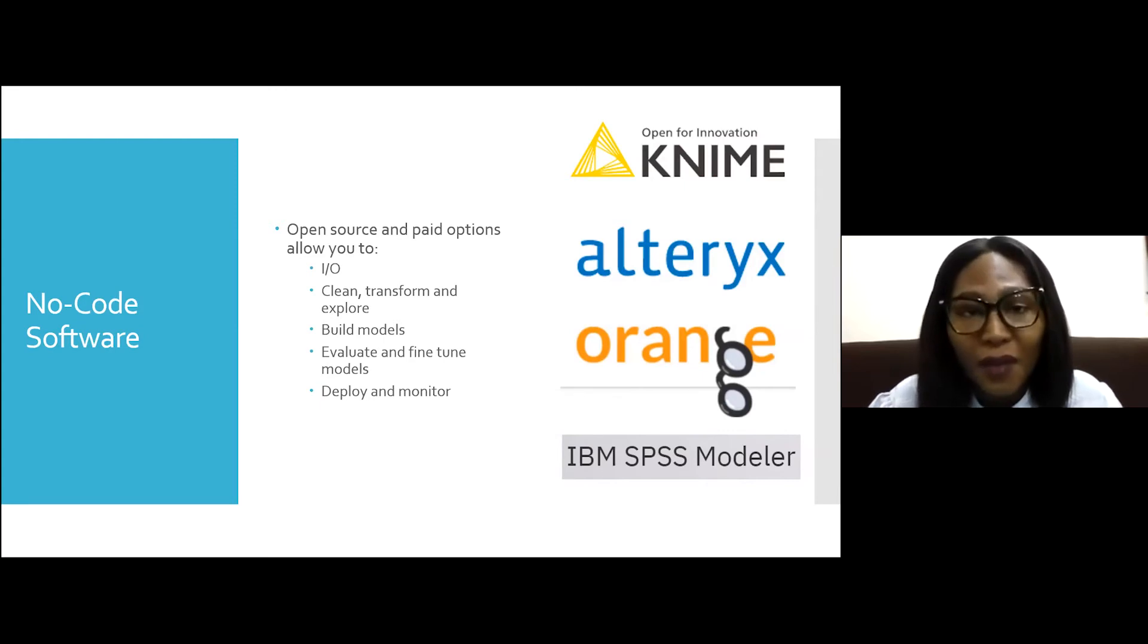There are many different options for no-code software. We have open source ones and paid options. They usually all allow you to bring data in, take it out, clean, transform, and explore data. You can build models, evaluate and fine-tune your models, and deploy and monitor your models. These are all things that we have to do when we do machine learning. KNIME is the one I recommend because it's open source. But the reason why that's so powerful is because since almost everybody has access to it, you're able to even build extra tools. KNIME itself comes with a lot of tools, but then you have community members such as myself who build extra tools for it. So there's hardly anything you can't do in KNIME. Alteryx is another one - they are very known for their user friendliness and they also have very nice training programs. Orange is also open source, and you also have IBM SPSS modeler.